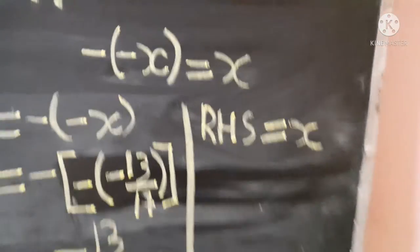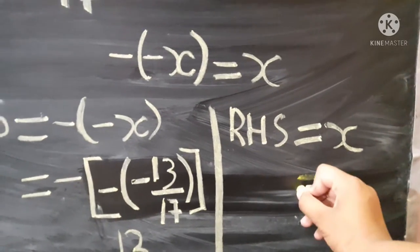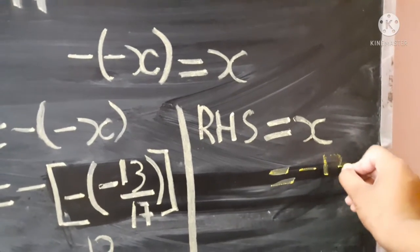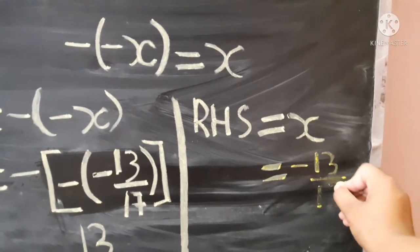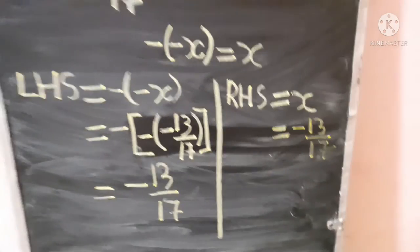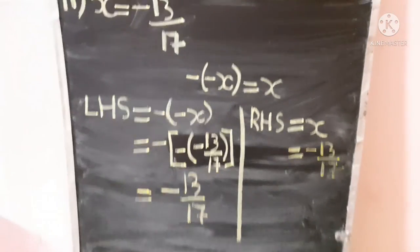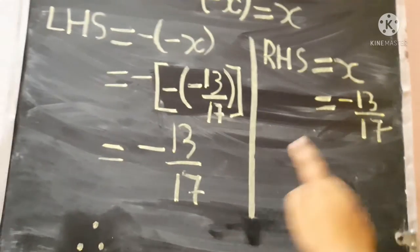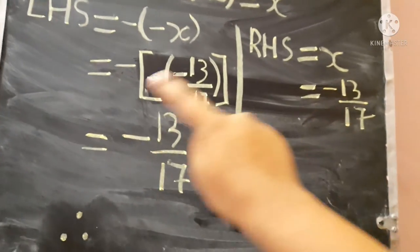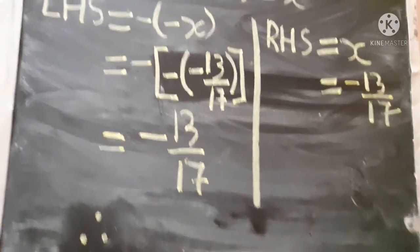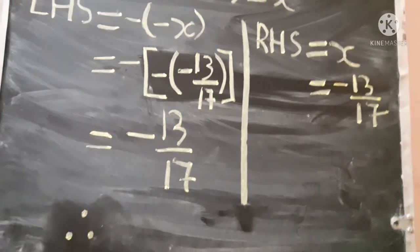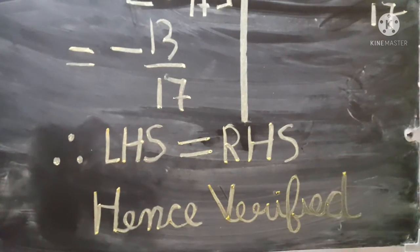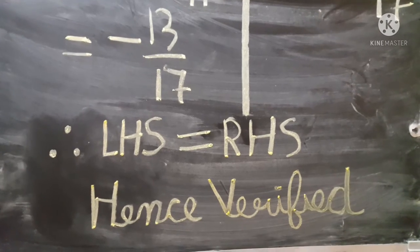Now RHS: x equals minus 13 upon 17. So LHS and RHS are both minus 13 upon 17. LHS equals RHS — minus 13 upon 17 on both sides — so we write LHS equals RHS, hence verified.